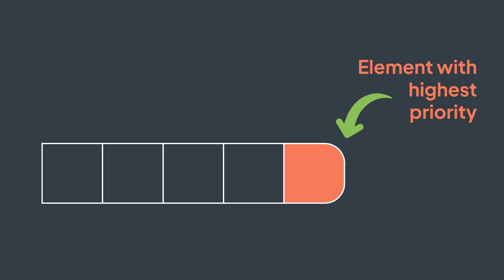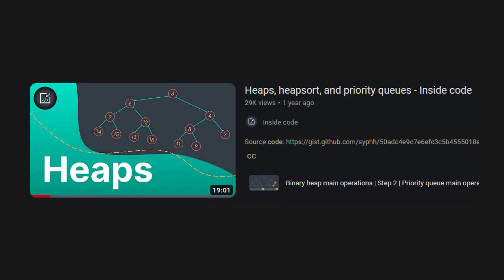A priority queue is a queue where the next element to be popped is not the first one that entered, but the one with the highest priority, and it's usually implemented with a heap. If you don't know about heaps and priority queues, you should really watch my youtube video on the subject. You'll find the link below, or you can just search for inside code heaps on youtube.